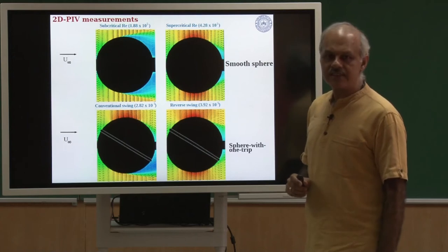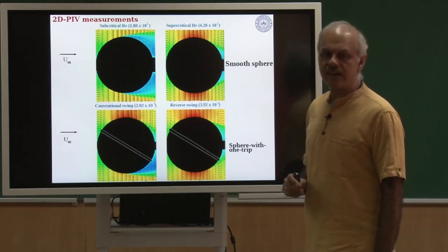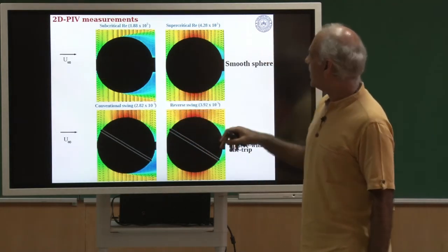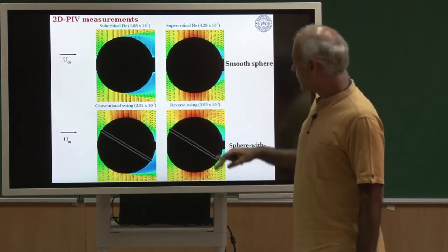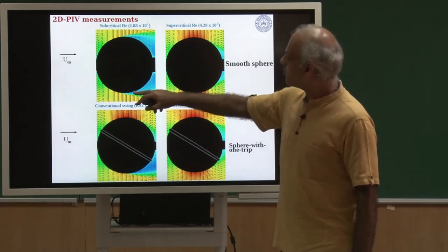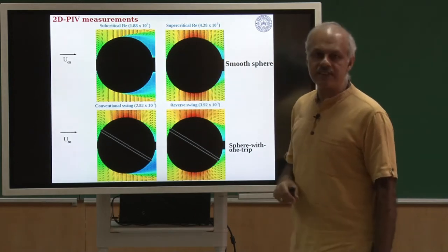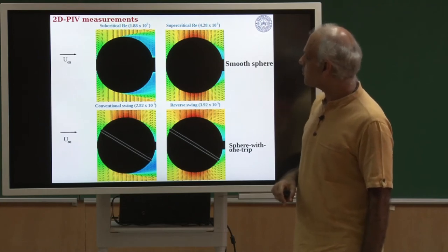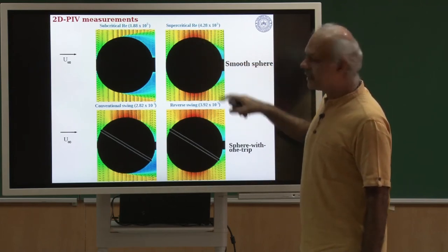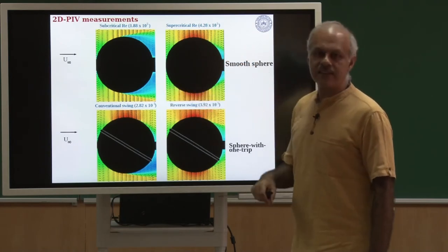How about the velocity vectors from the PIV measurements? This picture has been made from time-averaged PIV measurements. The flow is from left to right and the top two frames are for a smooth sphere and the bottom two frames are for a sphere with one trip. This is a subcritical flow where you have laminar separation — you can see the flow has separated, blue is the region of low speed with reversing flow. When you go to a supercritical Reynolds number, you get a delay in flow separation and the separation zone is also much smaller.